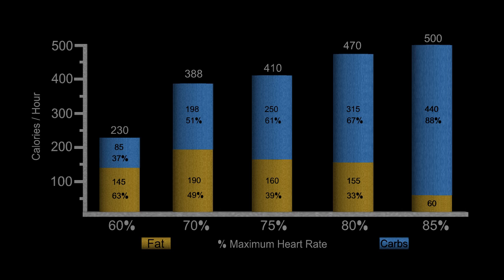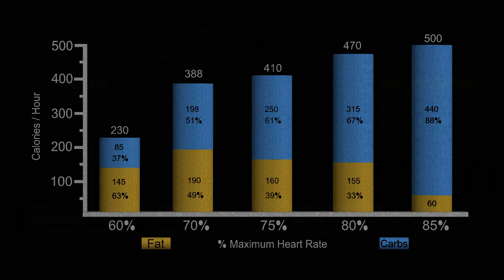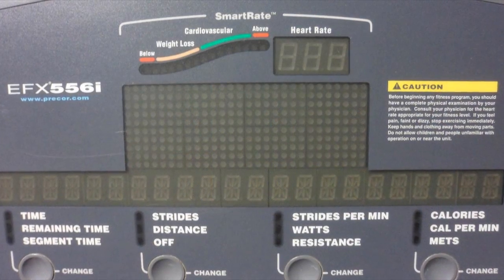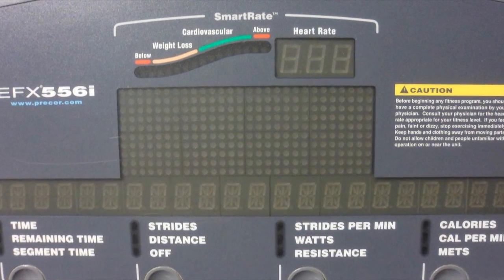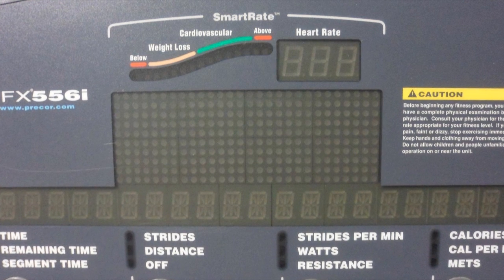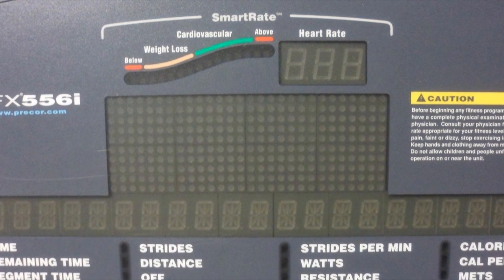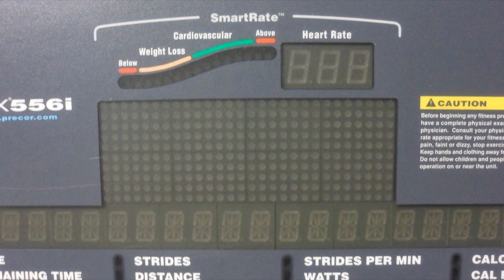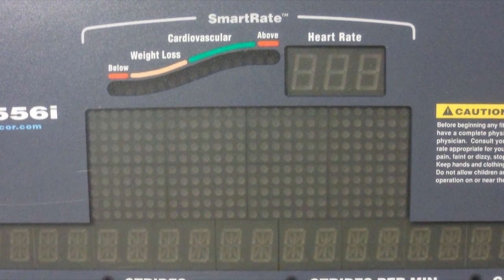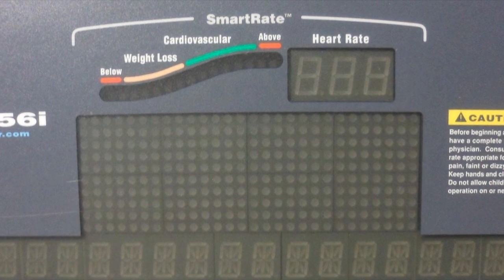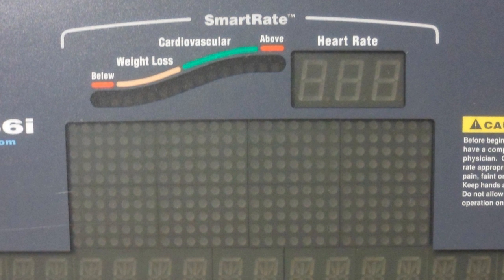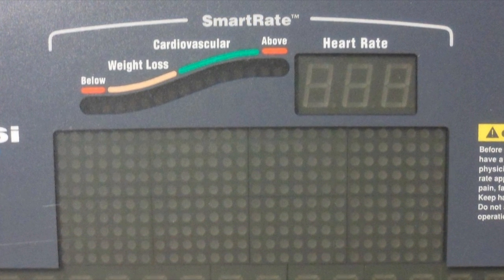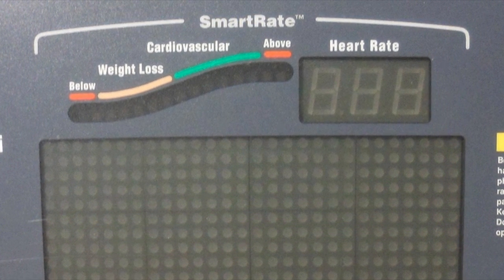So you'll see the maximum fat burn is going to be around 70%. And that's why when you go to the gym and you get on this aerobic equipment, you'll see this little chart on there that monitors your heart rate. And the lower heart rates at around 70% will be labeled weight loss or fat burn because that is the level that's going to maximally utilize your fat store. So if you're looking to burn this fat, you don't want to be at your maximum heart rate. You want to be somewhere around 70%.